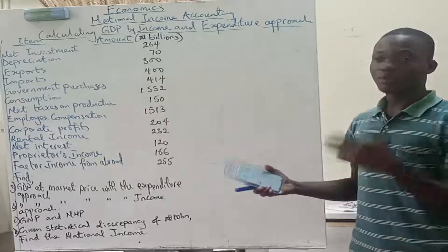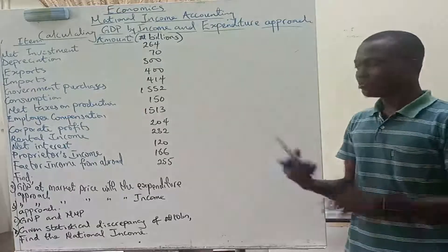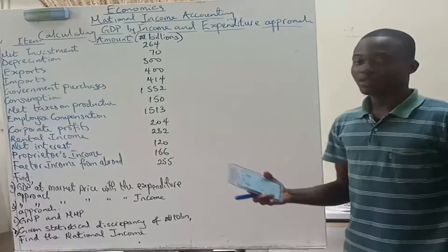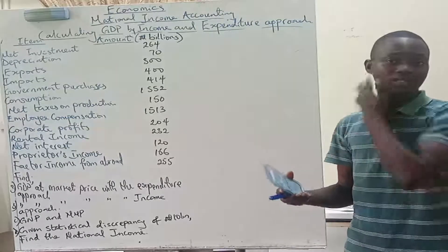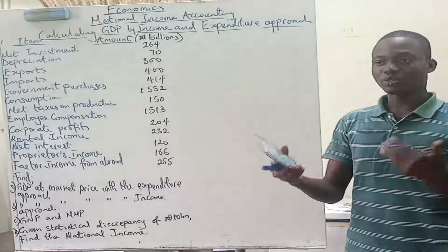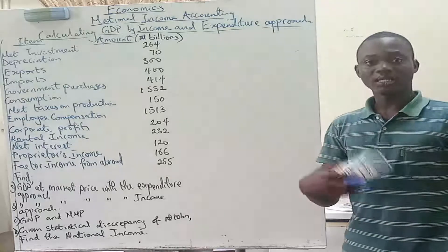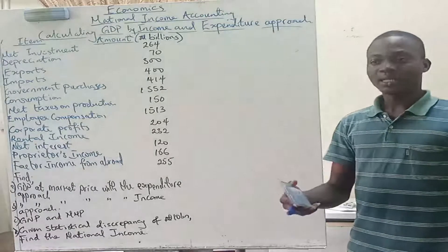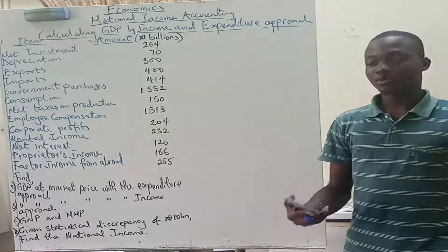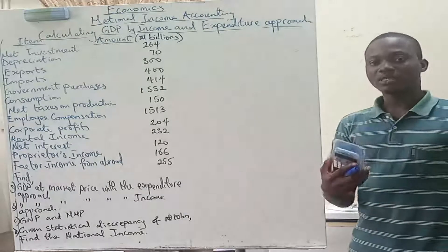Corporate profit is the income of incorporated firms. Rental income is the income of individuals who own factors of production — basically income of households, since in economics households are assumed to be the owners of factors of production. Net interest is the difference between interest received and interest paid by firms. So if a firm is lending money to another firm, the interest it receives minus the interest it pays on loans it has obtained for production gives you net interest.